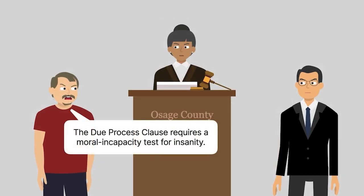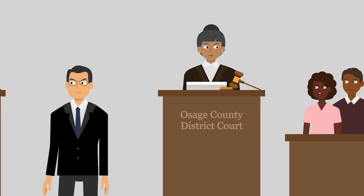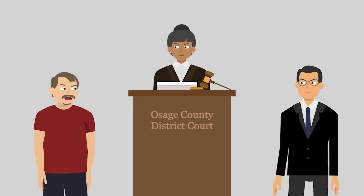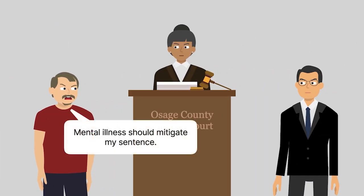Kaler argued that the Due Process Clause required Kansas to adopt a moral incapacity test for insanity. But the trial court disagreed, and the jury ultimately convicted Kaler. During the sentencing phase, Kaler was allowed to use evidence of his mental illness as a mitigating circumstance, but the jury still sentenced him to death.